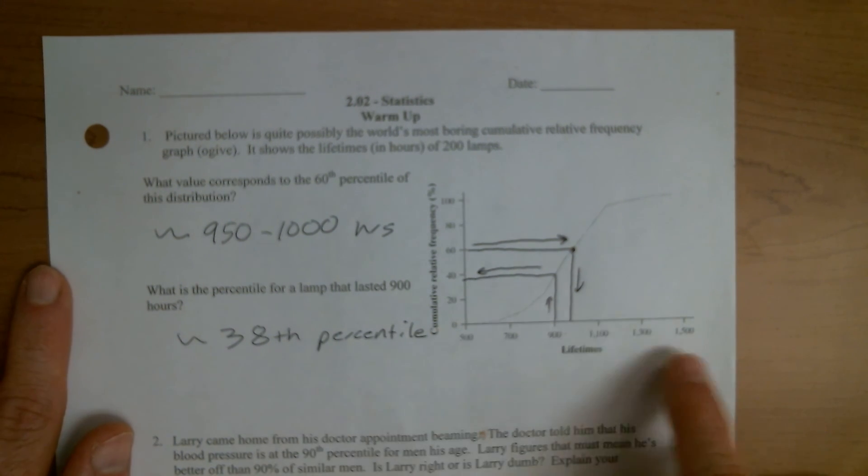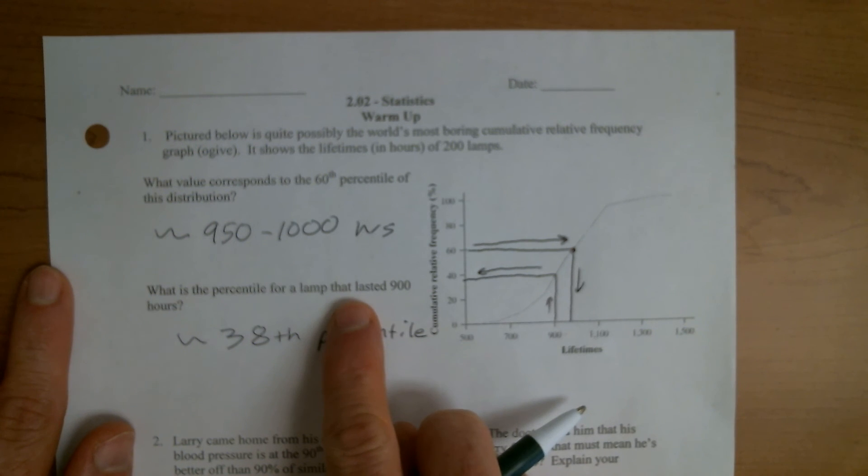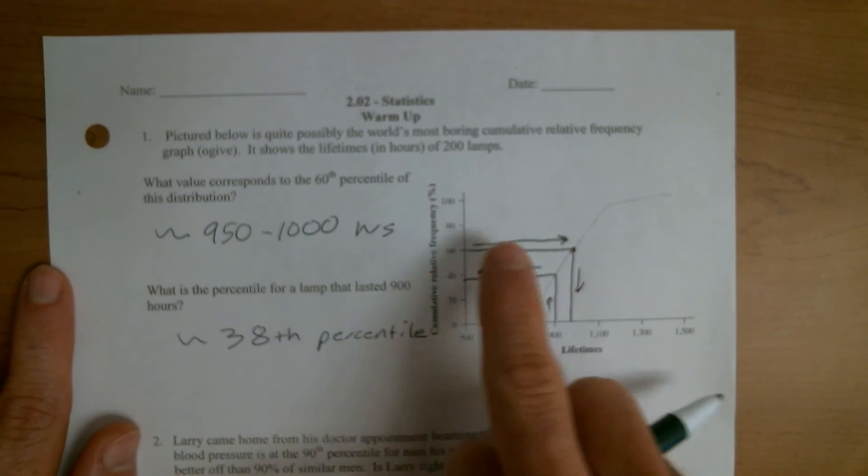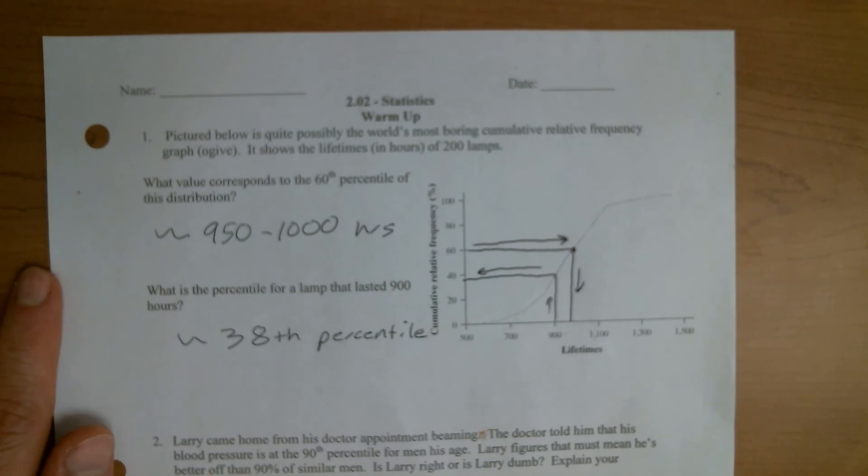But again, if they give you the value, you're going up and then to the left. If they give you the percentile, you're going to the right and then down. All right, next one.